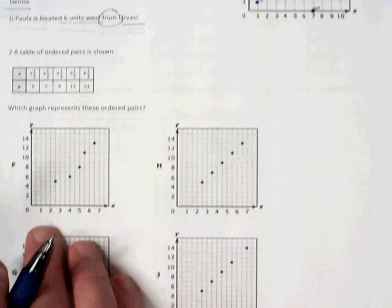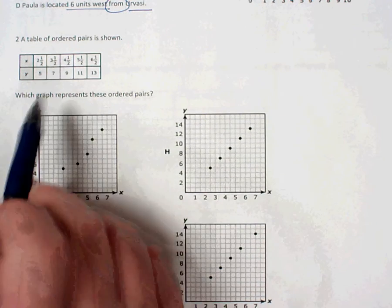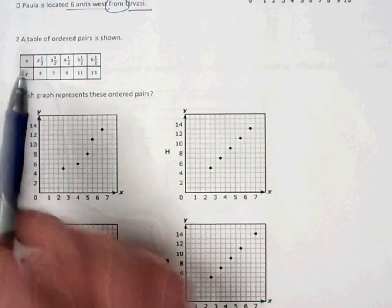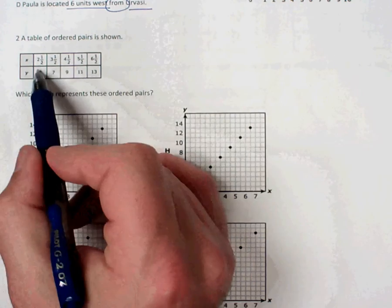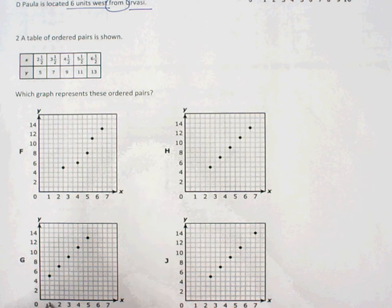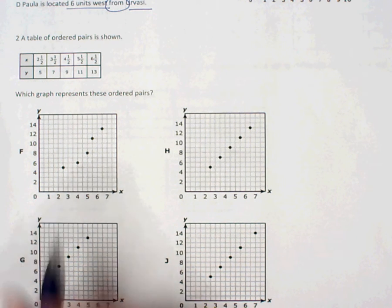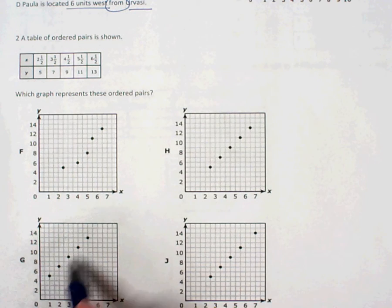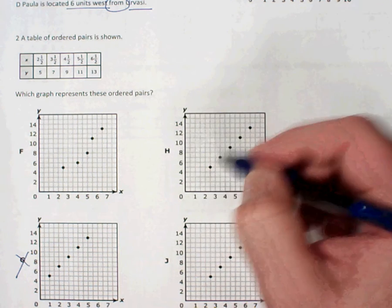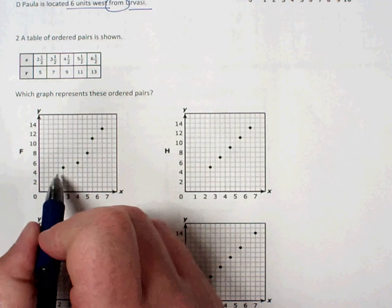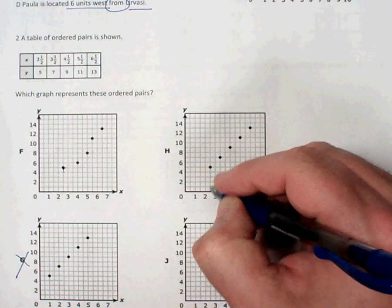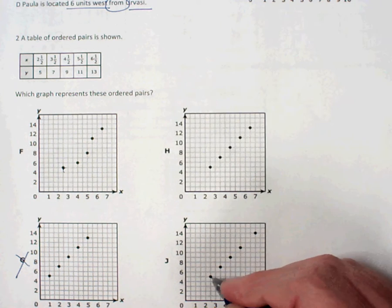Number 2. And number 2 is really just a matter of seeing which one of these coordinate planes with these points plotted go with my function table here. So start at x is 2.5. And the easiest way to do this is just look. Is that the first point that I come across? So like for G, the first point for G is (1,5). Well, I don't have any x's that are 1. And there's only 5 points. So I know G's not going to work. J's got a 2.5 point. So I'm still good so far. So (2.5, 5). So that works here for F. Let's check it for H. (2.5, 5). Yep, still works.